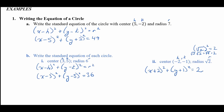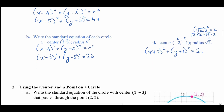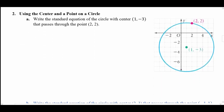Moving on to Example 2: using the center and a point on a circle. Write the standard equation of the circle with center (1, −3) that passes through the point (2, 2). We still use the standard form: (x − h)² + (y − k)² = r².